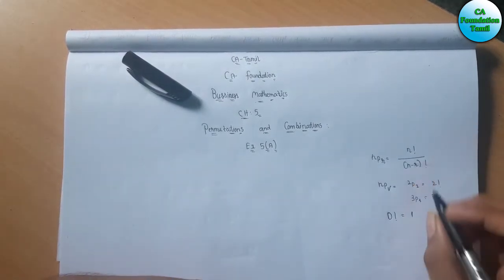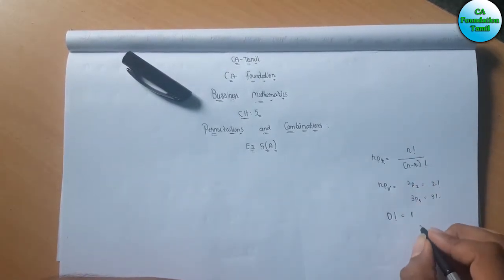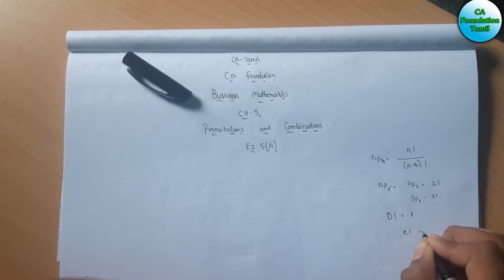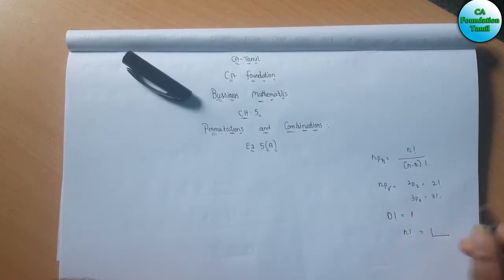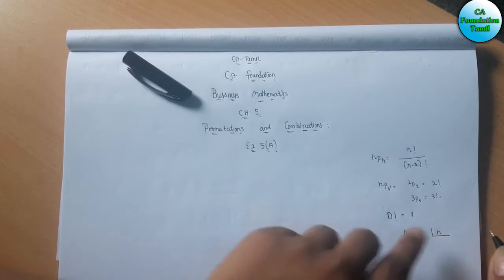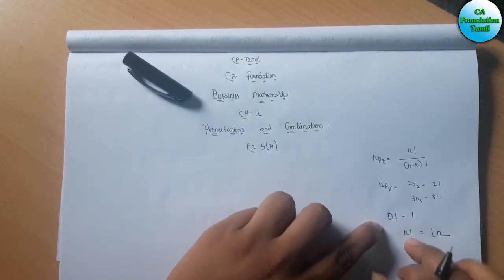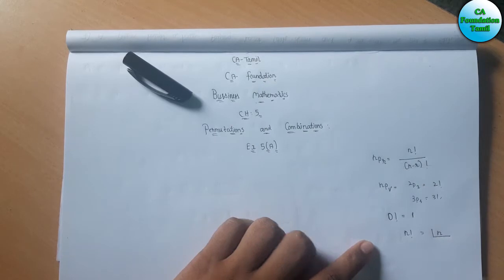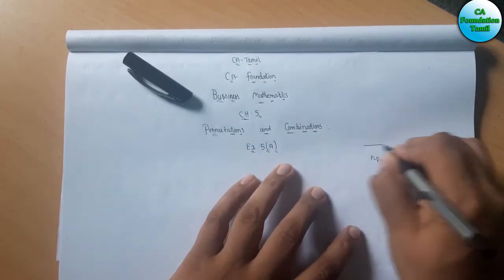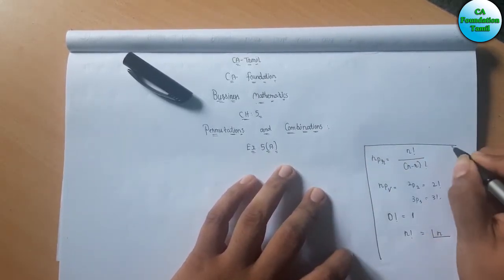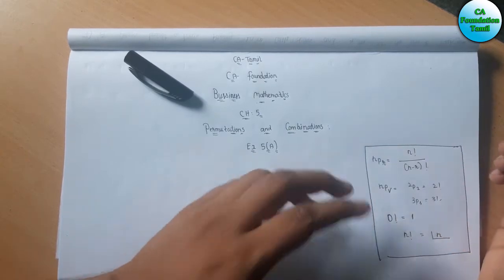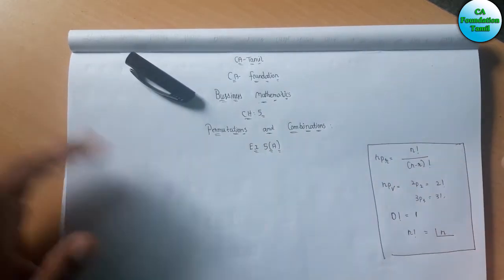In factorial notation, you can denote it in different ways. You can divide it and express it. N factorial and 0 factorial — you can denote these as common terms to know. I am going to explain a common term.